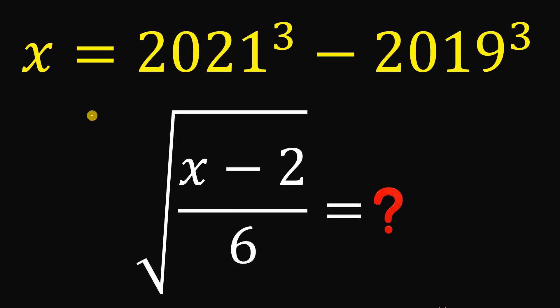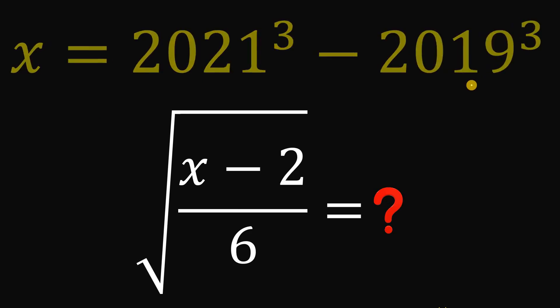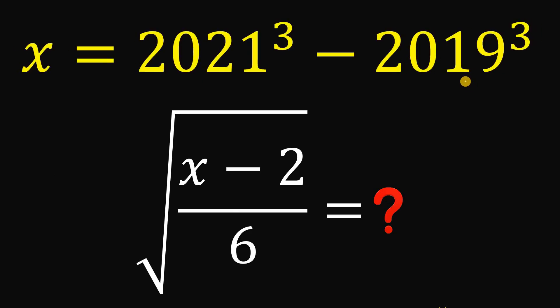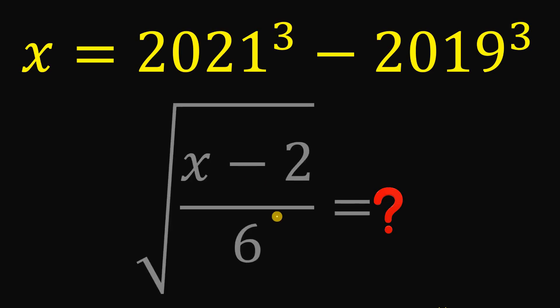For today's question, if we know that x equals 2021 cubed minus 2019 cubed, then what is the numerical value of the square root of x minus 2, all over 6?